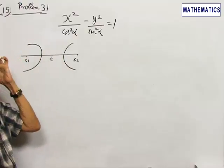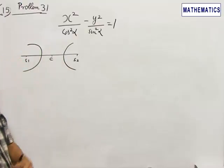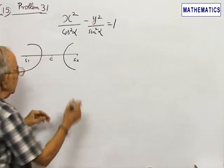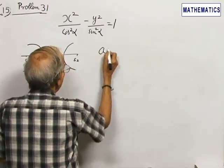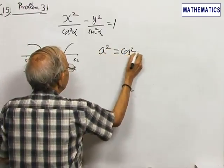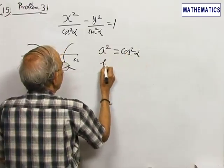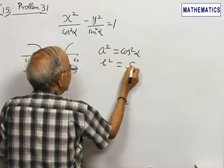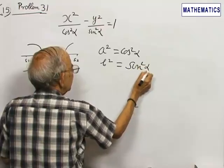Comparing with the standard equation of the hyperbola x squared by a squared minus y squared by b squared equal to 1, you get a squared equals cos squared alpha, b squared equals sin squared alpha.